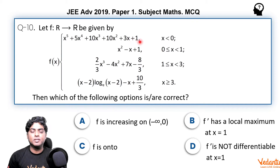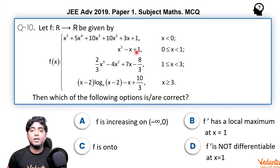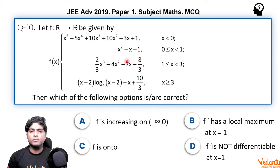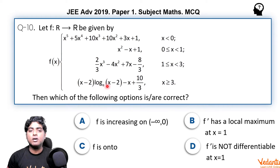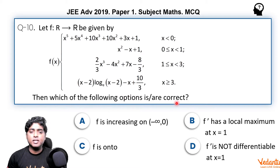The function is piecewise defined: for x < 0 it is (x+1)⁵ − 2x; for x ∈ [0,1) it is x² − x + 1; for x ∈ [1,3) it is (2/3)x³ − 4x² + 7x − 8/3; and for x ≥ 3 it is (x−2)ln(x−2) − x + 10/3. Which of the following options is correct?